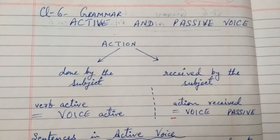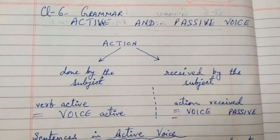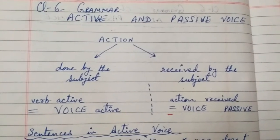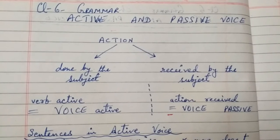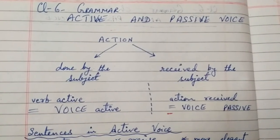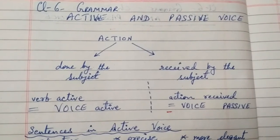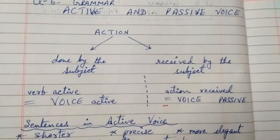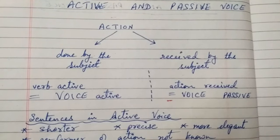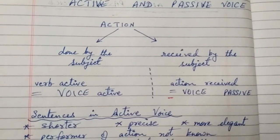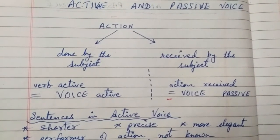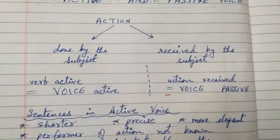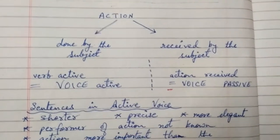Welcome children to this new video in which you will learn about active and passive voice. It is a very important topic in English grammar, and you will come to know what is active voice, what is passive voice, and how to create sentences in each. First of all, verb is an essential part of a sentence — without a verb, no sentence can be created in the English language.